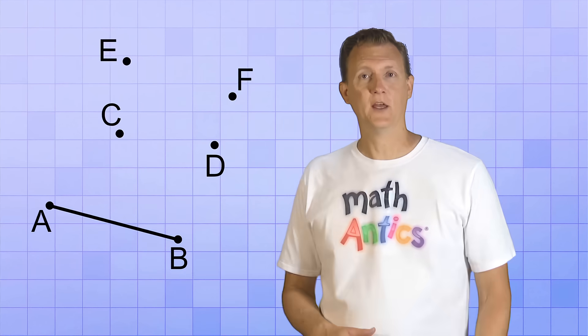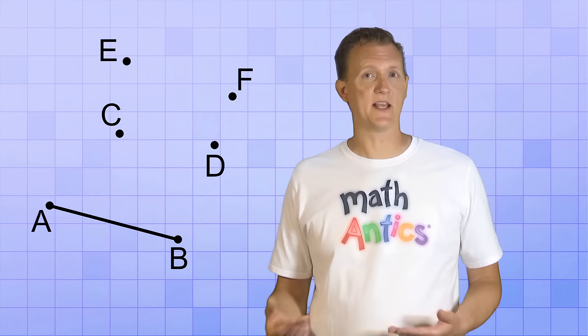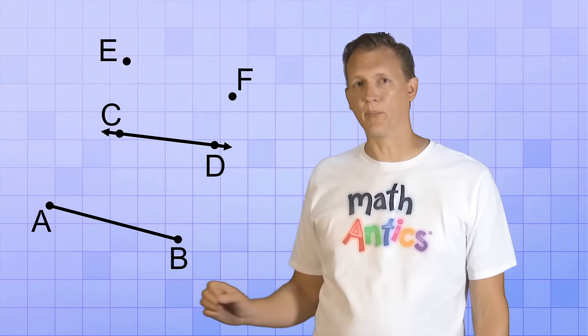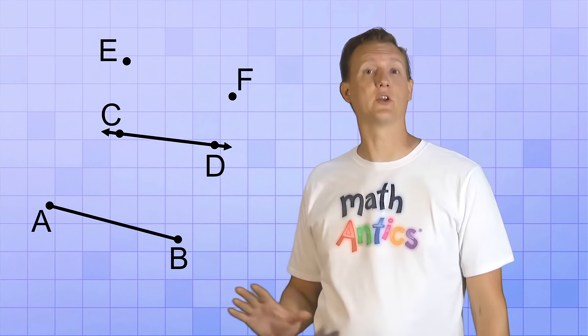Well, at least we imagine that it goes on forever. We can't actually draw a line that goes on forever. So here's what we do instead. To draw a line instead of a line segment, you just go past the endpoints a little bit, and you put an arrow on both ends of the line to show that it keeps on going.